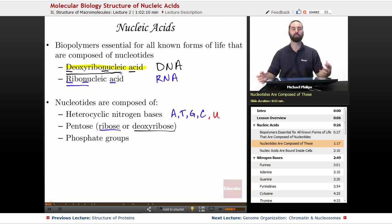And finally, nucleotides have phosphate groups. They'll have one, two, or three phosphate groups. Remember we have PO4 three minus.